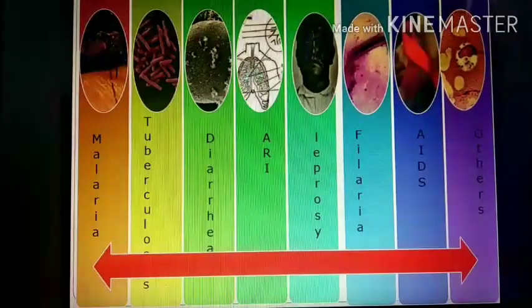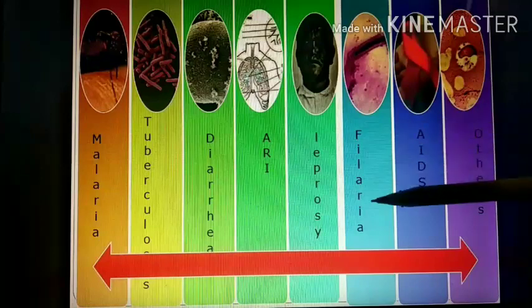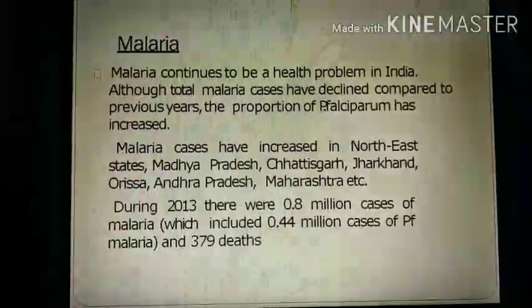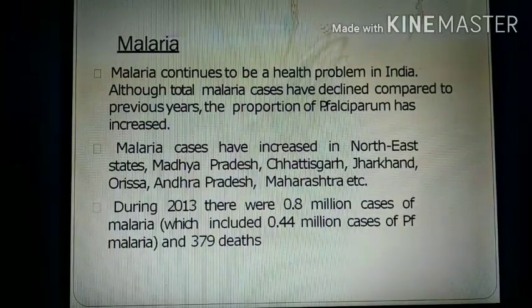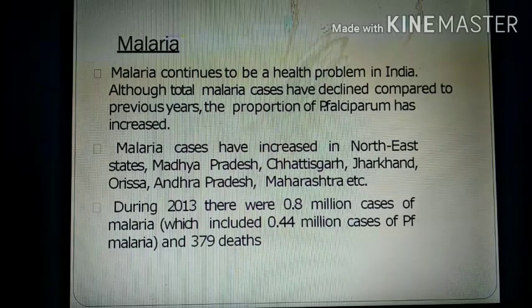The communicable diseases include malaria, tuberculosis, diarrhea, acute respiratory infection, leprosy, filaria, AIDS, and other problems. Starting with malaria — malaria continues to be a major health problem in India. There were many cases earlier, and now these cases are being controlled, but it remains a significant health issue.